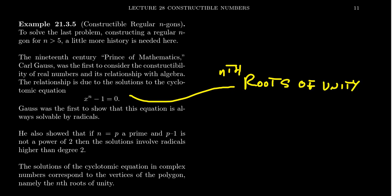Those are the n roots of this thing. Gauss was the first to show that this equation is always solvable by radicals. The roots of unity are always solvable by radicals.